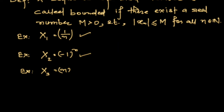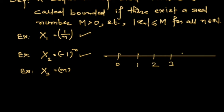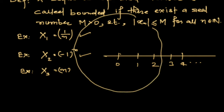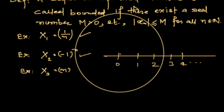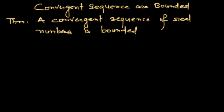On the other hand, if you draw the sequence of natural numbers itself, it will be 0, 1, 2, 3, 4, and so on. No matter how large you make a circle, you will always find a natural number greater than the radius, so this sequence is actually not bounded.